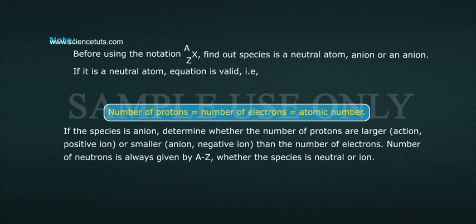If the species is an ion, determine whether the number of protons are larger (cation, positive ion) or smaller (anion, negative ion) than the number of electrons. Number of neutrons is always given by A minus Z whether the species is neutral or ion.